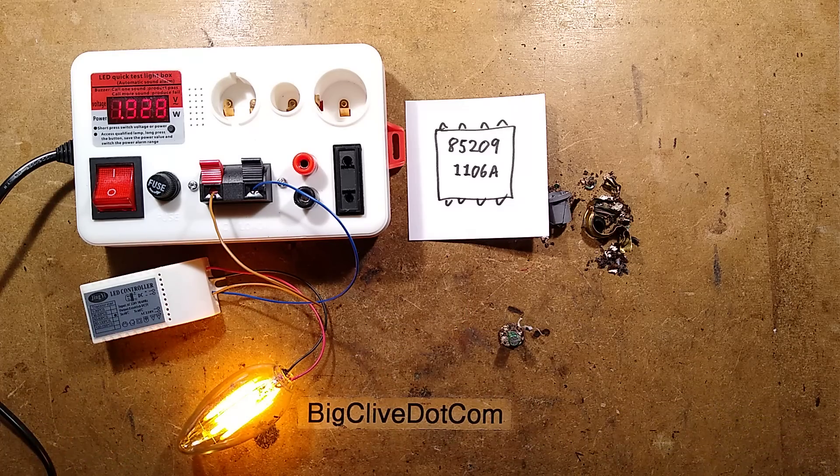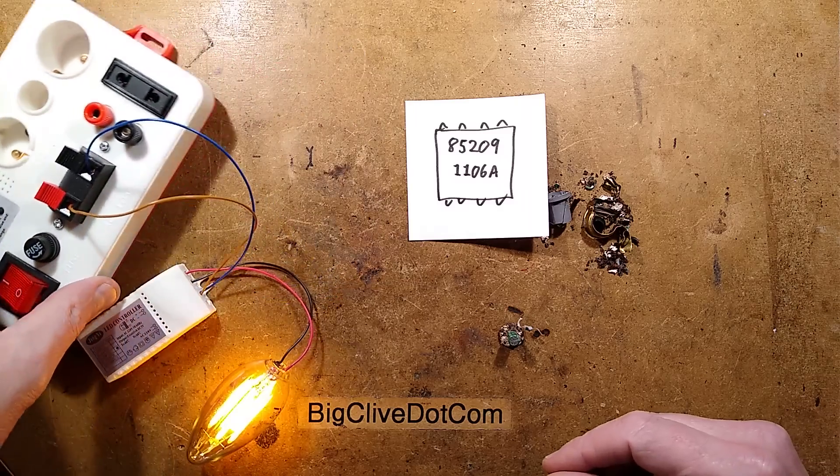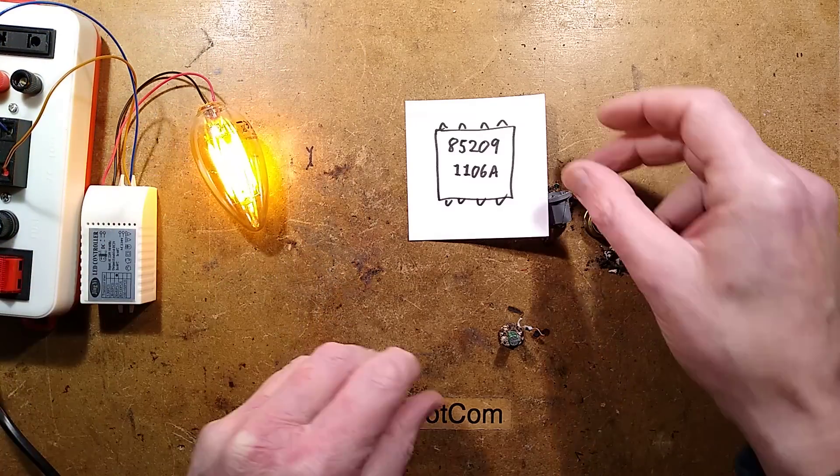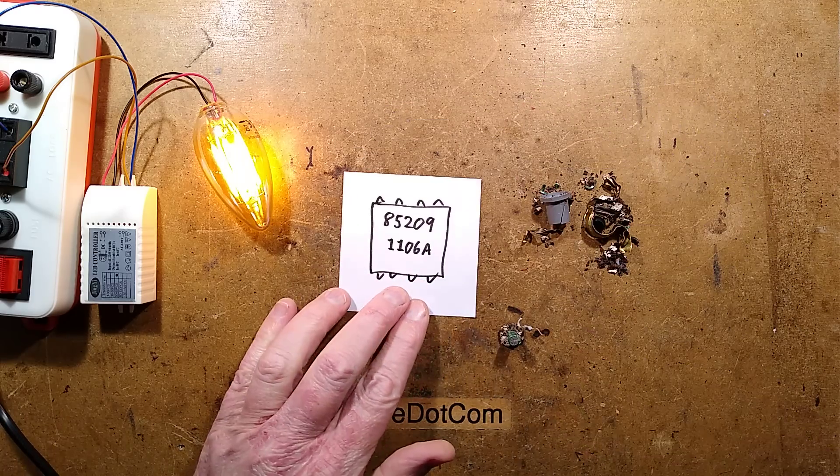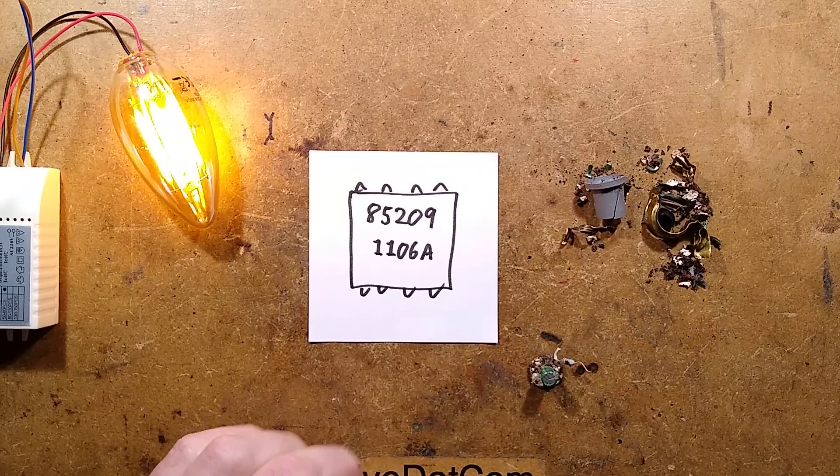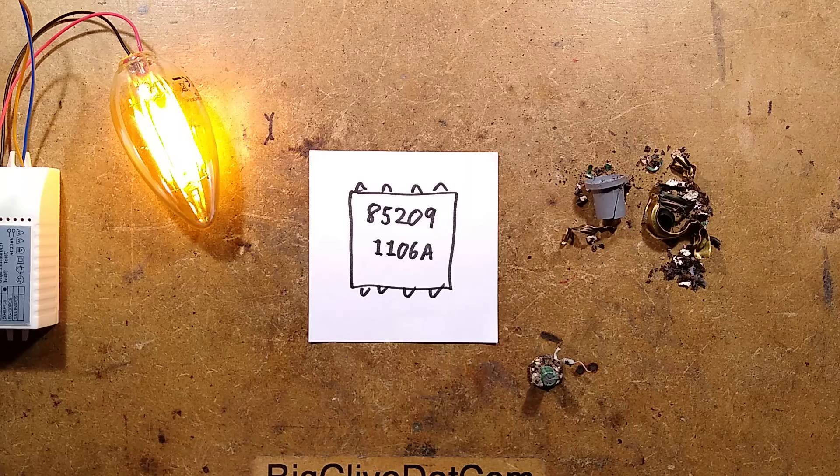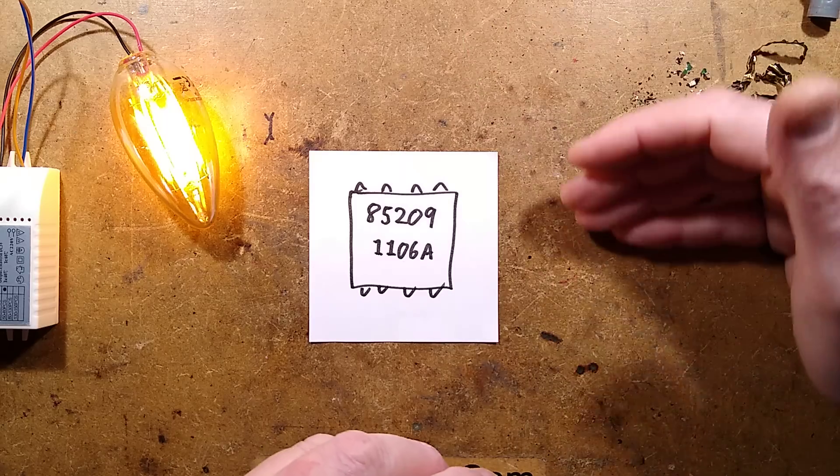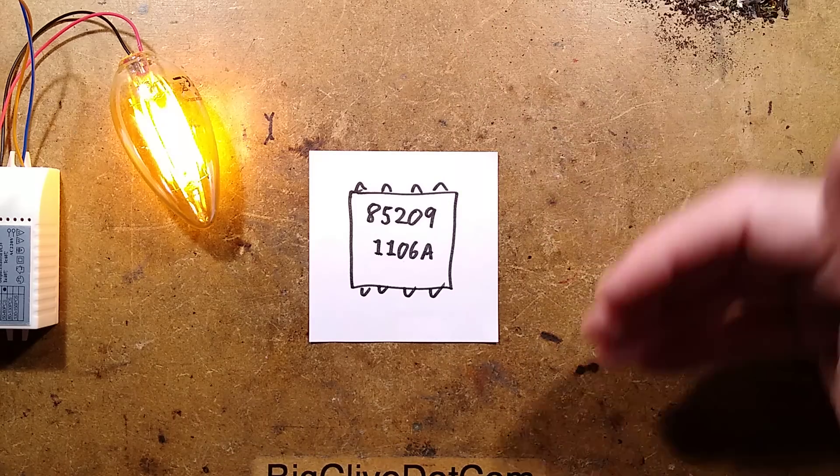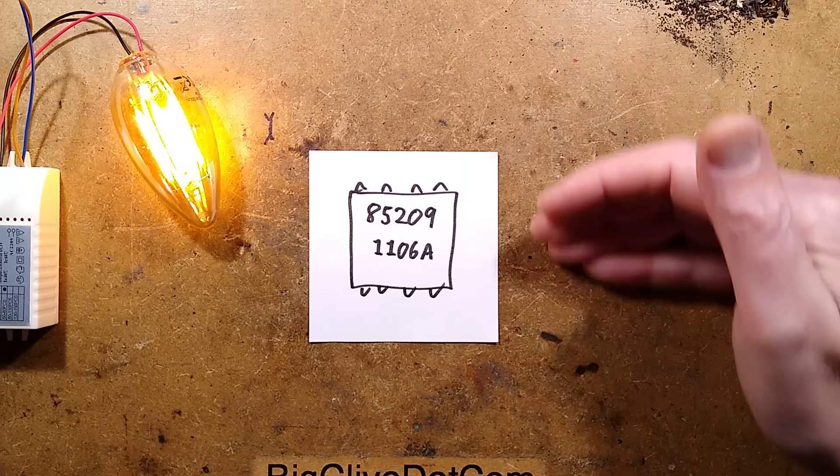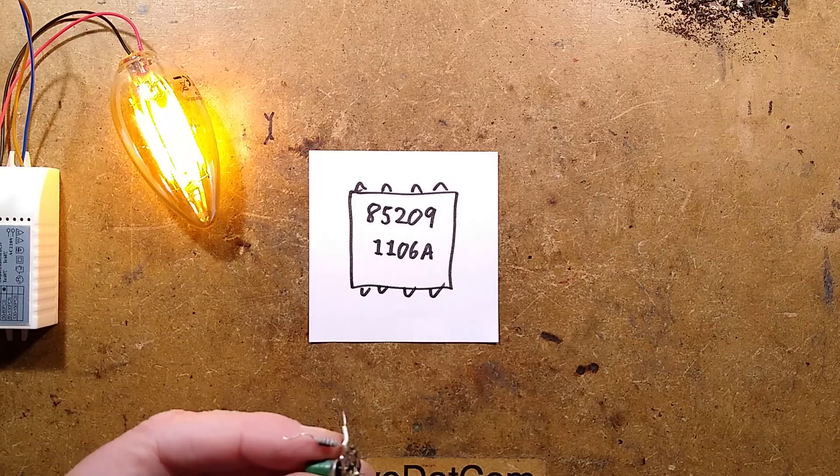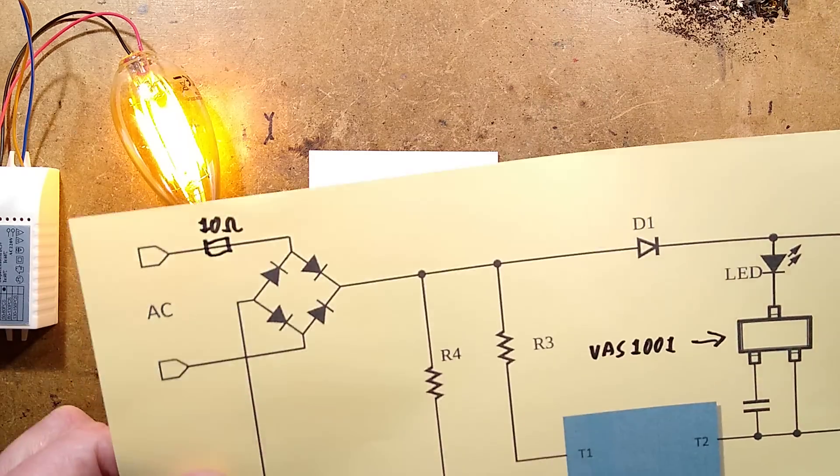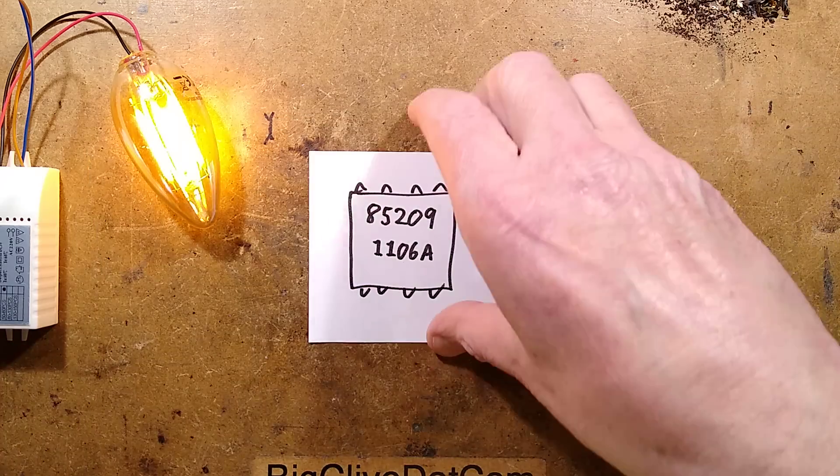That's a shame when things like that happen. So I managed to uncover this chip. It says 852091106A. It took a bit of detective work, took a long time to actually work this out. I've just swept all this crusty crumbly burnt stuff off to the side. But based on number of components, I was able to find out that it is a VAS1106A.